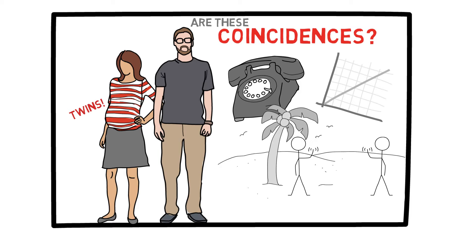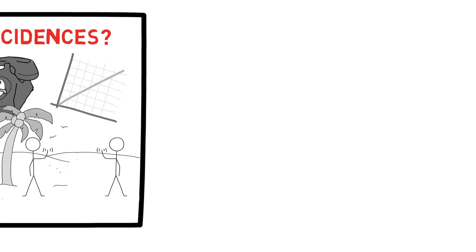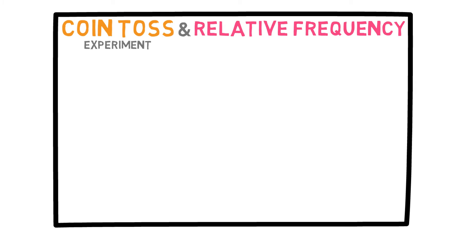These examples may seem very different, but they are all related. To explain this, let's return to our simple coin toss experiment. We first discussed this experiment when talking about the concept of relative frequency. If you remember, when tossing a coin many times, the number of heads will approach 50% as you do more tosses.